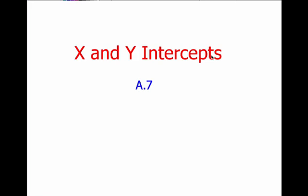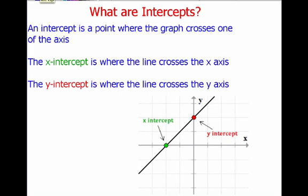For this video we're going to be discussing x and y intercepts. So what are intercepts? Well, an intercept is just a point where a graph crosses one of the axes, so the axes being our horizontal x-axis and my vertical y-axis. An intercept is just one of these points where it crosses an axis.